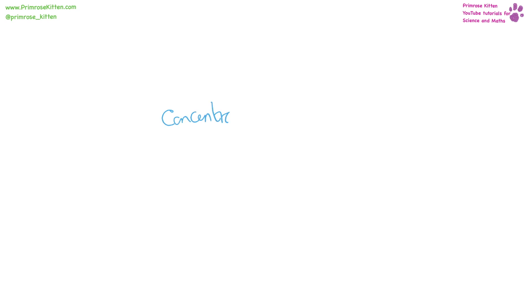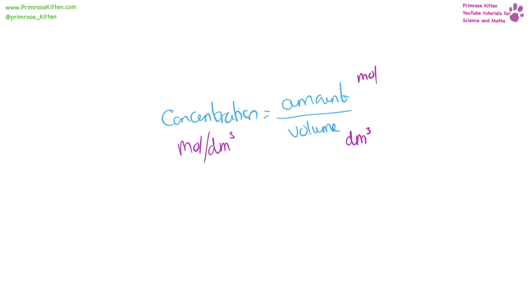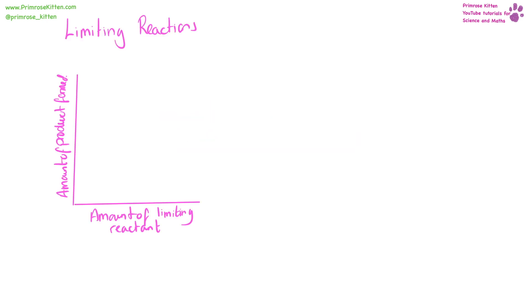When working out concentration: concentration = amount ÷ volume. Concentration is measured in moles per decimetre cubed, amount in moles, and volume in decimetre cubed. When you have an equation, there is always going to be a limiting reactant. The reaction will continue using up the limiting reactant and forming product until the limiting reactant is used up, at which point the reaction stops. Whatever you don't want to be the limiting reactant, you need to make sure the other one is in excess.